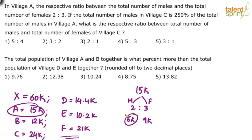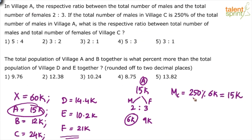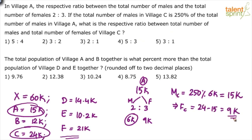The total population of village C is 24,000. If males in C are 15,000, then females in C are 24,000 minus 15,000, which is 9,000. The question asks for the ratio of males to females in village C: 15,000 to 9,000 simplifies to 5 is to 3. The answer is option 4.